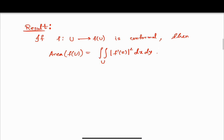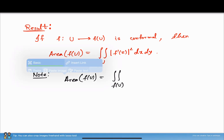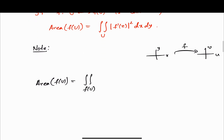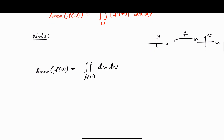Note that the area of f(U) is just the integration over f(U) of du dv. Suppose f is a mapping from the xy plane to the uv plane in the complex plane. Then the area will be the double integral over f(U) of du dv, which is the area of the region f(U). Now if we make a change of variable, we need one more result.